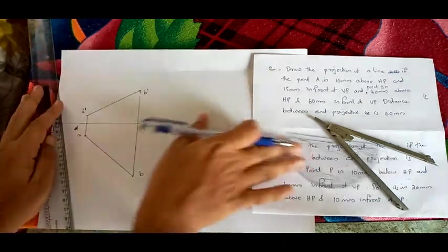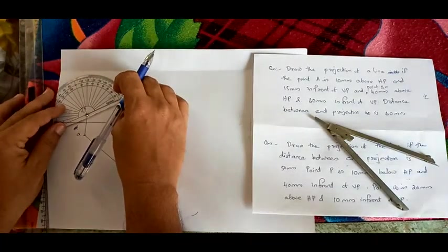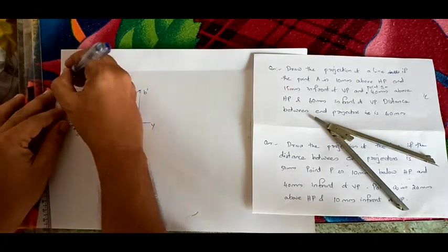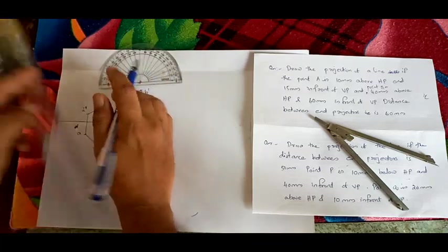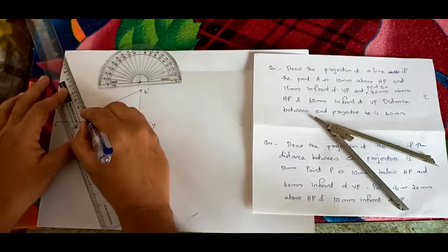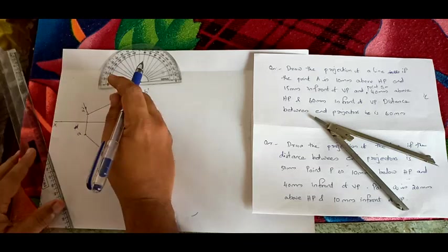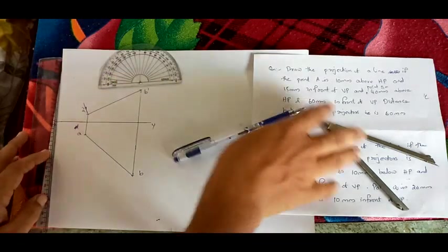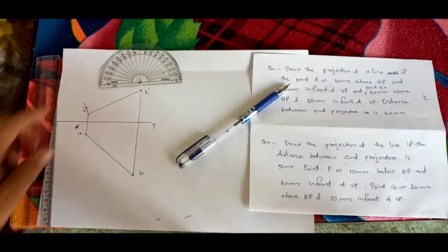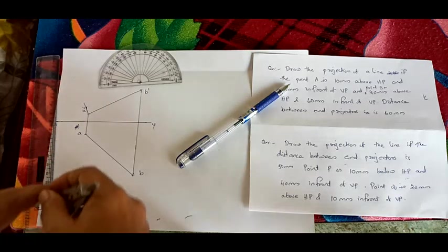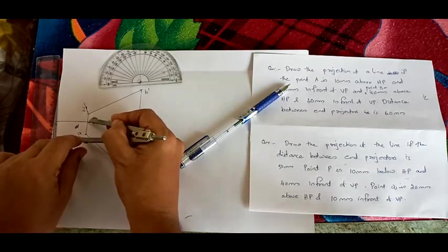First, what we are going to do is take from A-dash. From A-dash, draw a perpendicular line — 90 degrees. We have drawn a perpendicular from A-dash. In order to find the true length corresponding to that point, we need to measure the distance from the XY line.